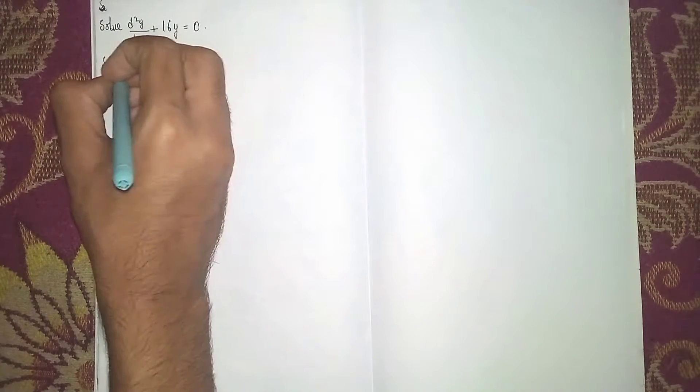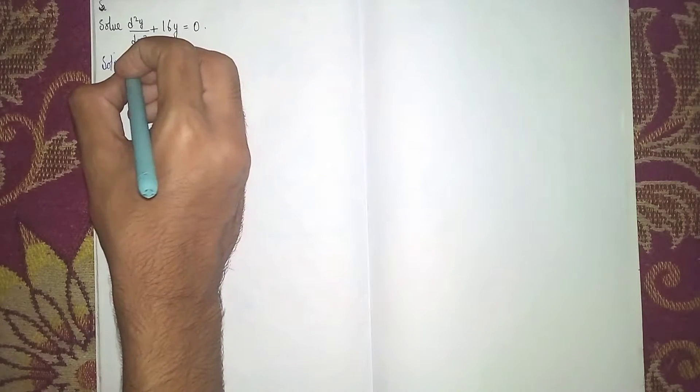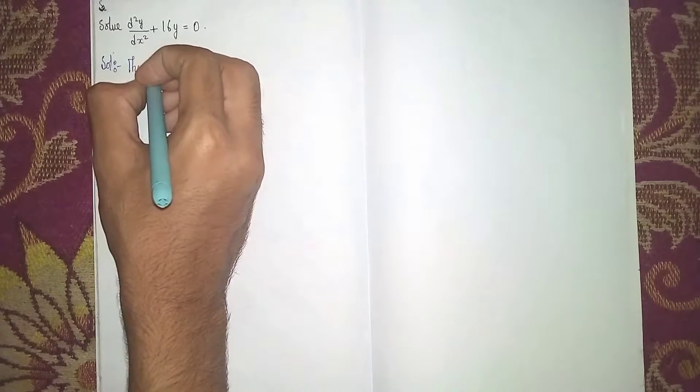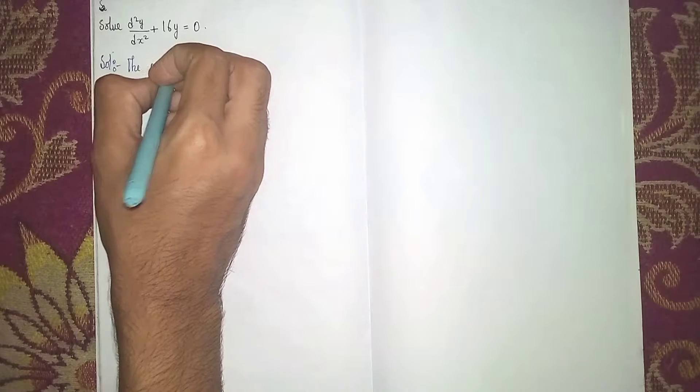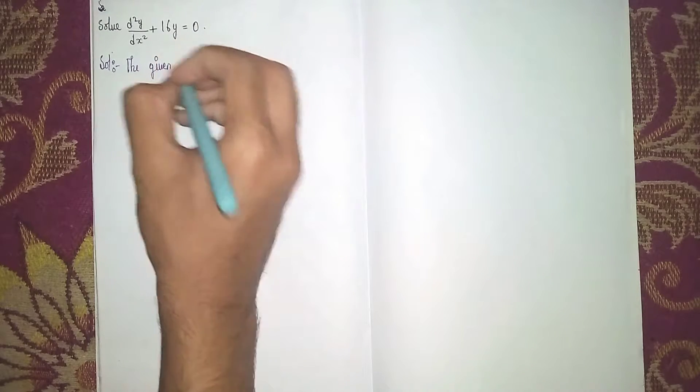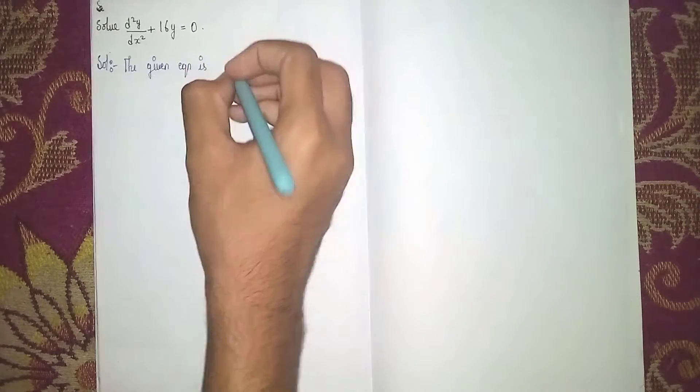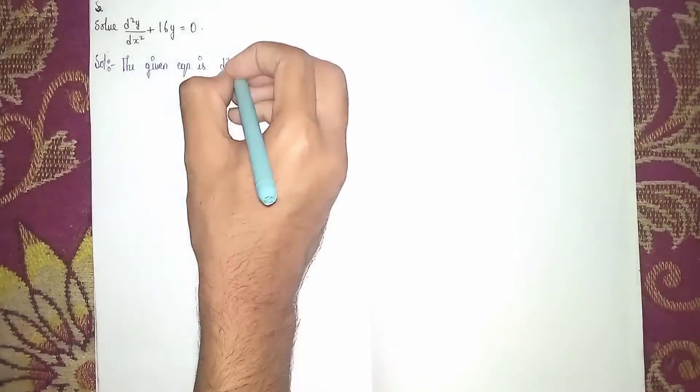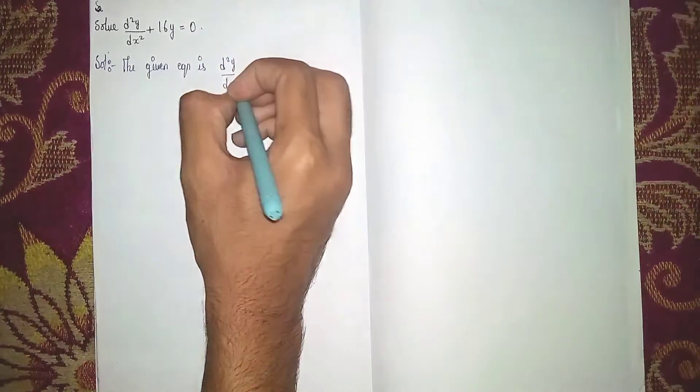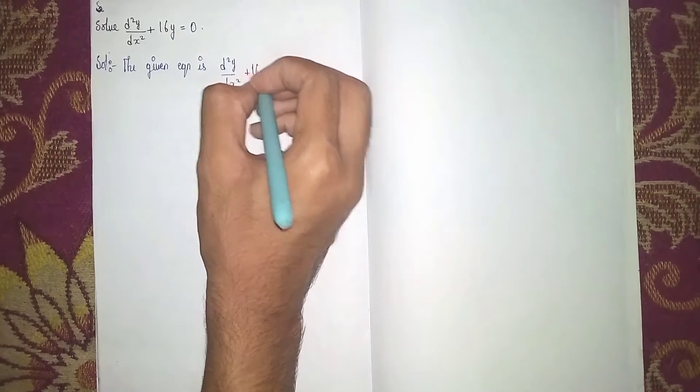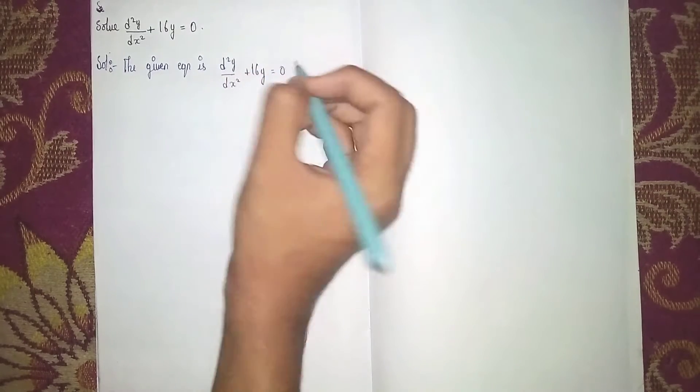Now write the given equation: d squared y by dx squared plus 16y equal to 0.